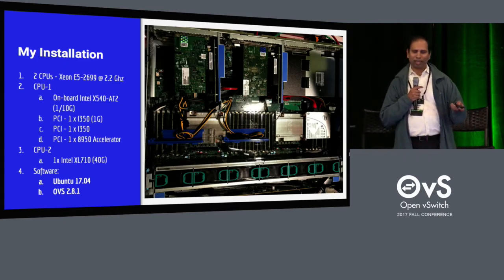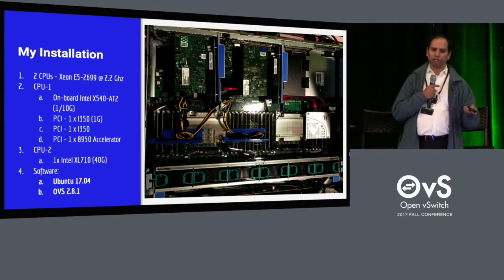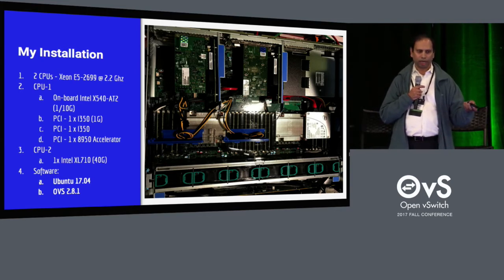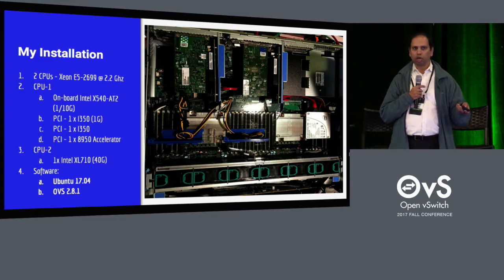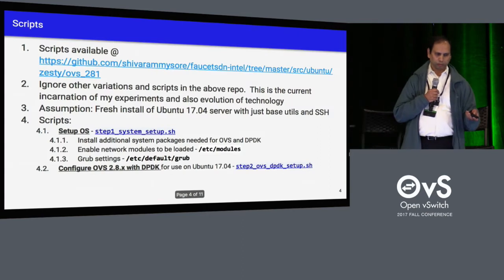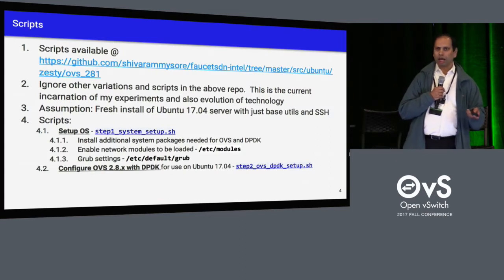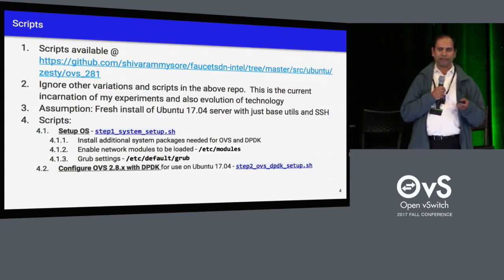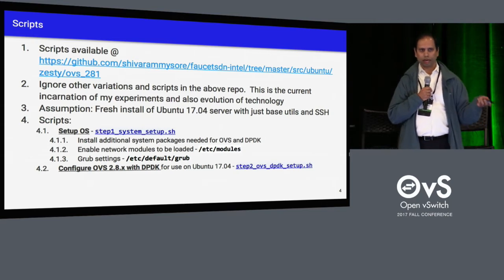My installation has two CPUs and a bunch of PCI 10 gig and 40 gig NICs. I use Ubuntu 17.04 with OVS 2.8.1. This is a lightning talk, so it's going to go really fast, but all these slides are available online so you can check them out.